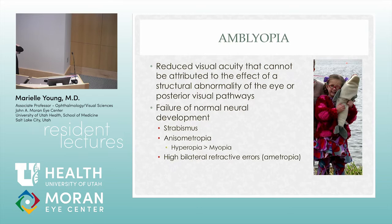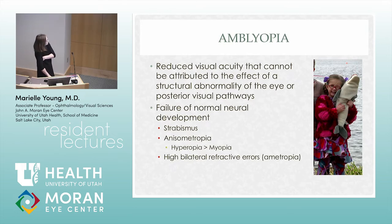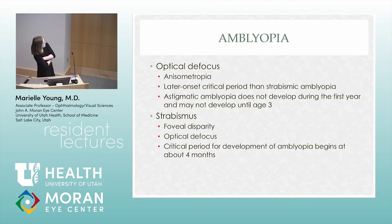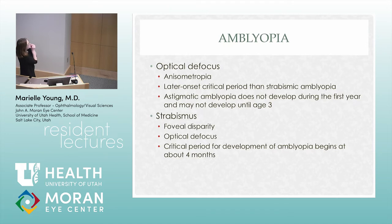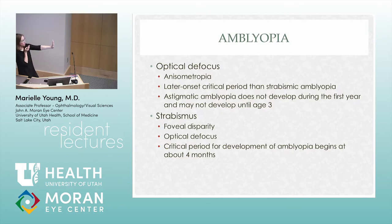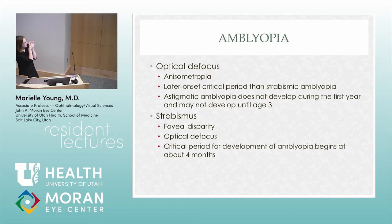Amblyopia can be caused by strabismus, anisometropia — much more farsighted in one eye than the other — or high bilateral refractive errors. If you have anisometropic amblyopia, where your eyes are just two different shapes, kids with hyperopia may focus the better eye and leave the other three diopters unfocused, causing that eye to always be blurry. Amblyopia from optical defocus is much easier to treat than strabismus amblyopia — just putting glasses on these kids often fixes it, even up to age 13.